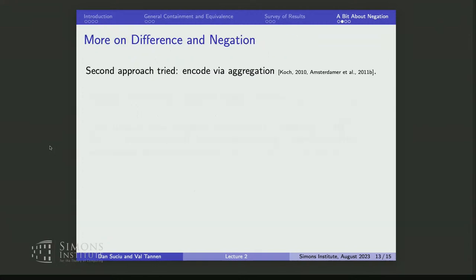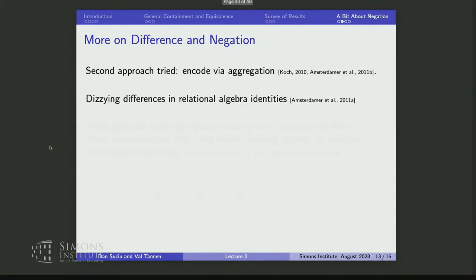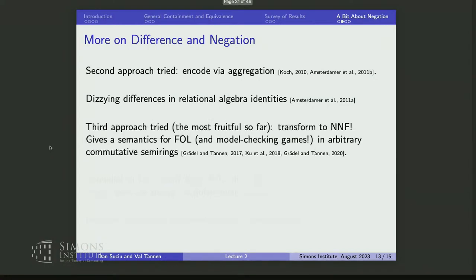The second approach is to encode negation via aggregation — not our idea, but Christoph Koch's — which appeared after we extended the semiring framework for aggregation. The problem is that some relational algebra identities involving negation and relational difference are satisfied in one approach but not the other and vice versa. We have a paper making all these comparisons.